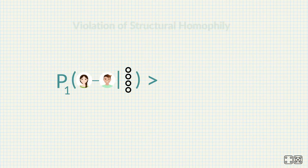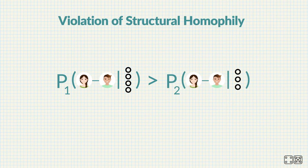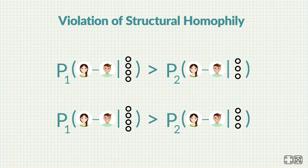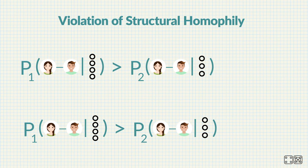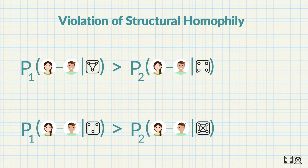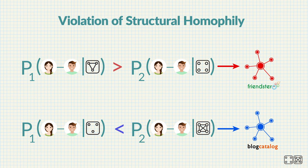But how does this compare to if Alice and Bob had only three mutual friends? Structural homophily suggests that with more mutual friends, Alice and Bob would be more likely to form a connection. However, when accounting for the structural diversity of common friends, the principle of homophily is violated — it may actually be more likely for Alice and Bob to date with three common friends than with four.